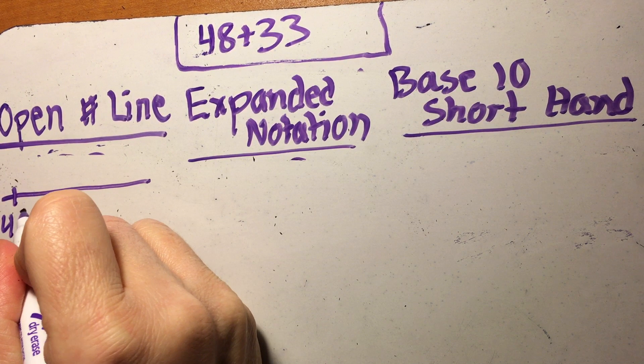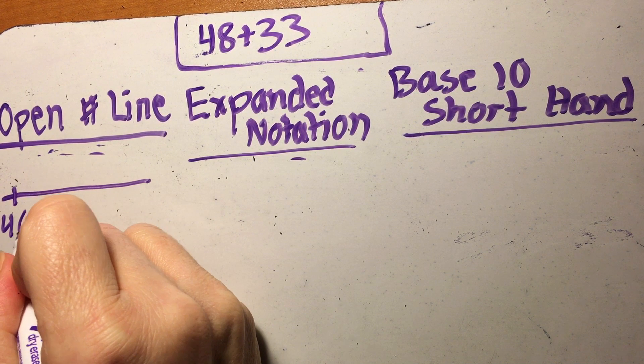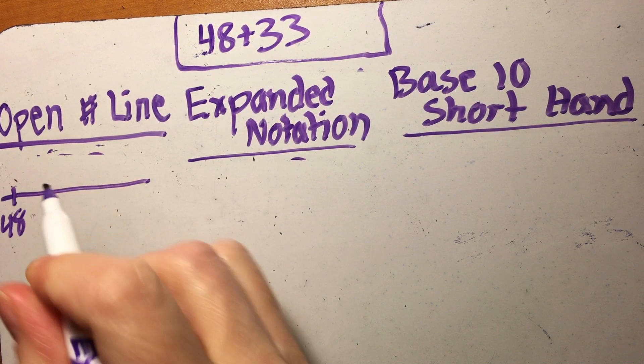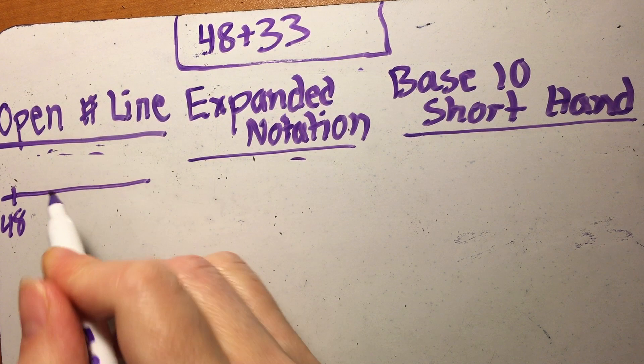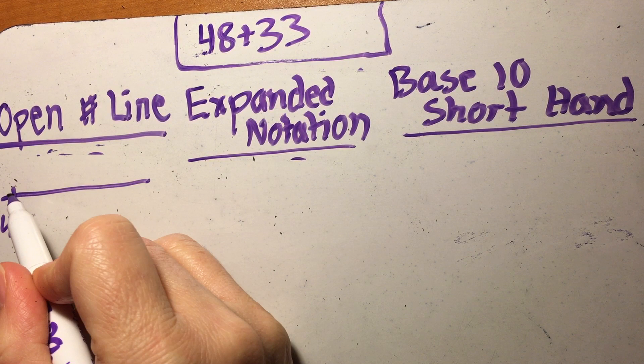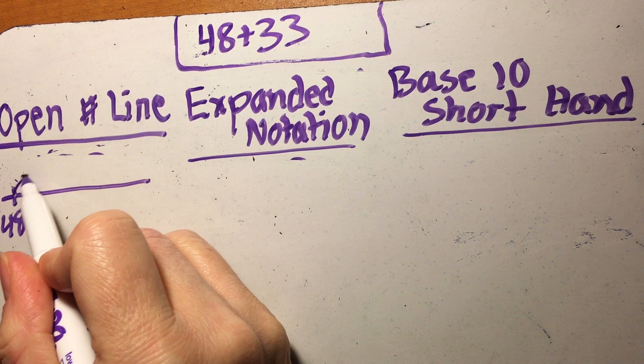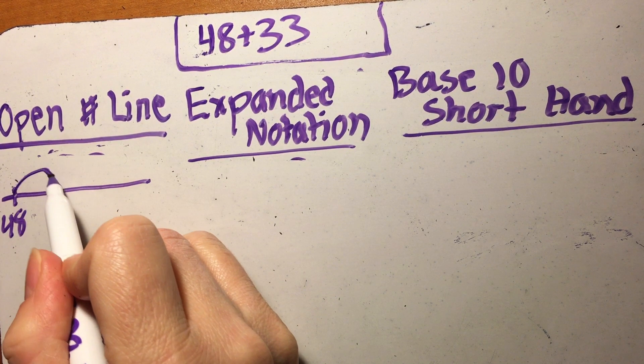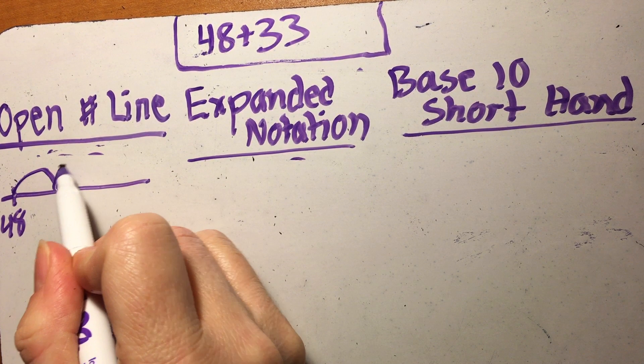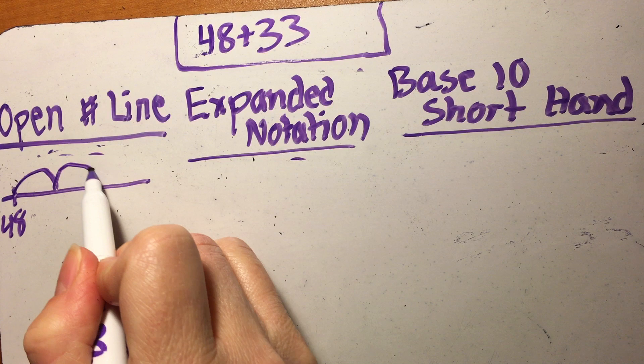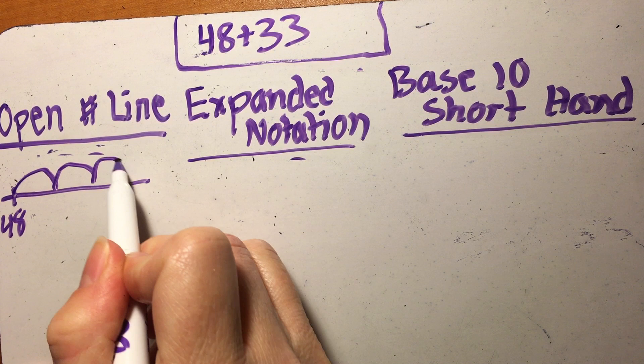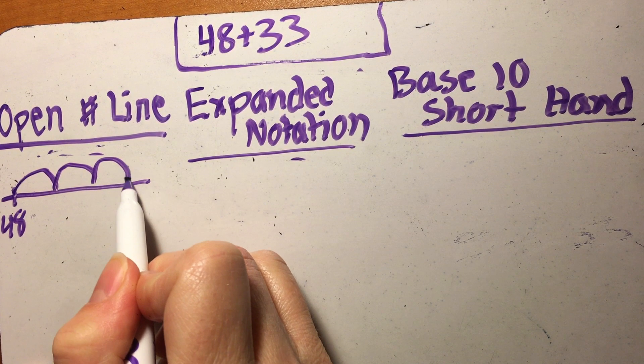Later on in our discussions we talk about more efficient ways, so how we would know which way would be easier and faster to solve it, but again we're slowing it way down for the parents because I know we all learn this a little differently. So we start with 48 and then we're going to add 33, so I'm going to make hops by 10. So I'm going to go 10, and then another hop will be 20, and then another one which will be 30.